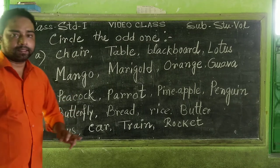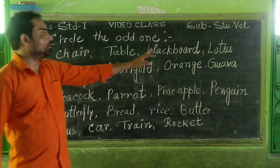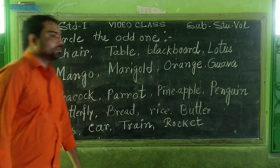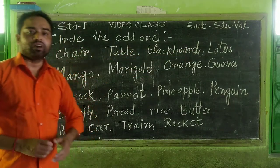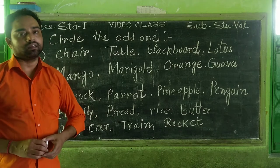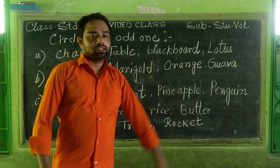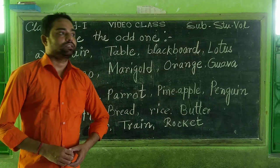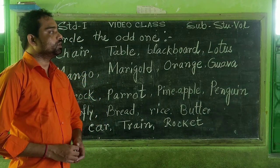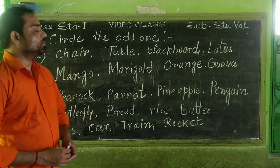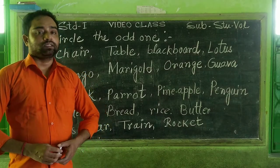First: chair, table, blackboard, lotus. Chair, table, blackboard, lotus. You find these are found in your classroom. But lotus — it is a flower. You find lotus at the pond, in the pond.